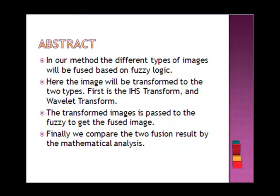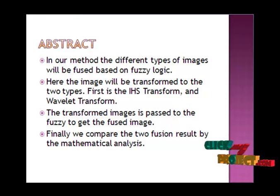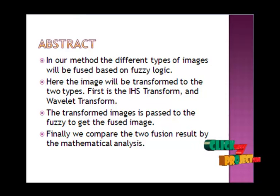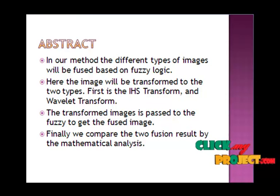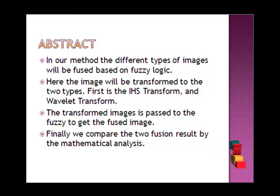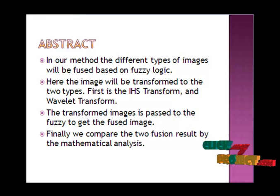Here we are comparing two transforms: the IHS transform and the Wavelet transform. Initially we generate the fuzzy rules and membership function. Images are in matrix form where each pixel's values are in the range from 0 to 255.